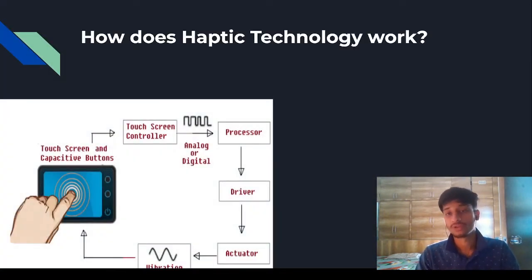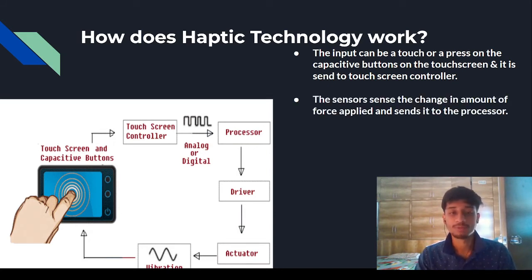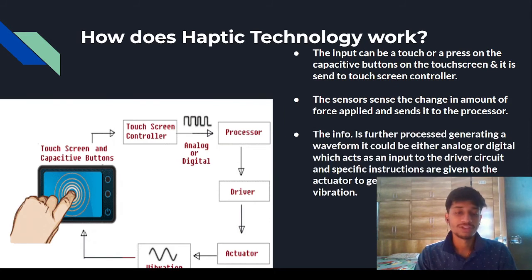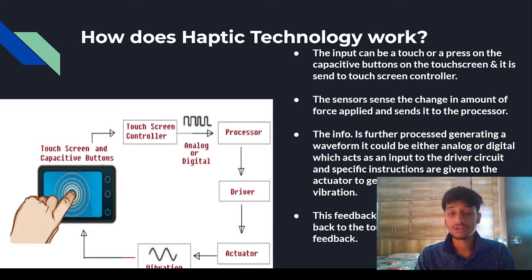Now we will see how haptic technology works. As you can see in this picture, the input can be a touch or a press on the capacitive buttons on the touch screen, which is sent to the touch screen controller. Sensors detect the change in force applied to the device and send it to the processor. The information is processed, generating a waveform — either analog or digital — which acts as input to a driver circuit. Specific instructions are then given to the actuator to generate a vibration pattern, and this feedback from the actuator is given back to the touch screen as force feedback.